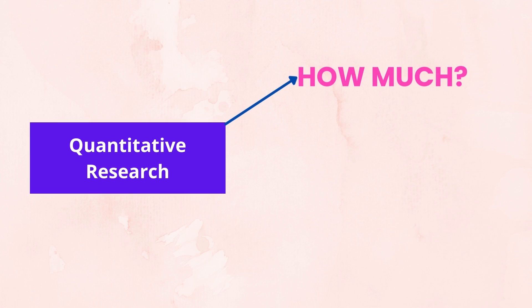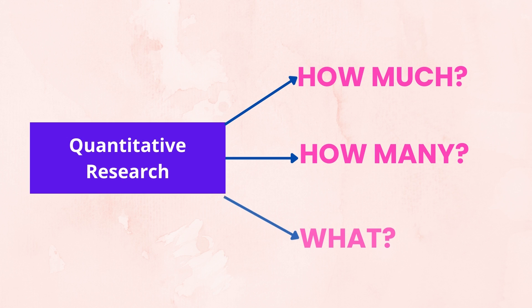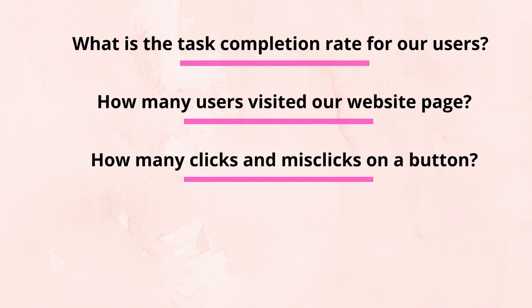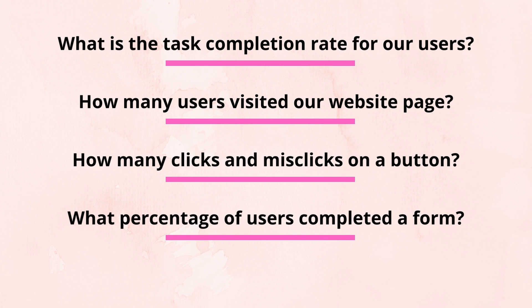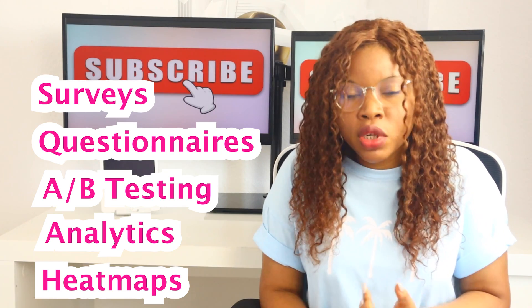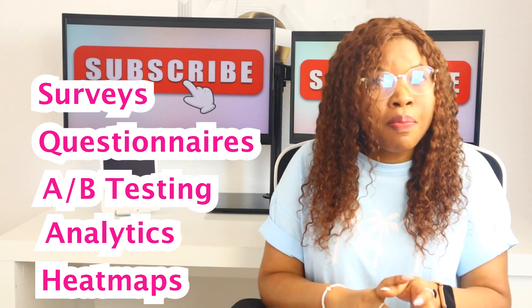Quantitative research is best for collecting numerical data and answers questions like: how many, how much, and what. For example — how much time do users spend on a task? What is the task completion rate? How many users visited a page on our website? How many clicks and misclicks on a button? What percentage of visitors completed a form? Common quantitative research methods include surveys and questionnaires, online polling, A/B testing, analytics, heat maps, and more.